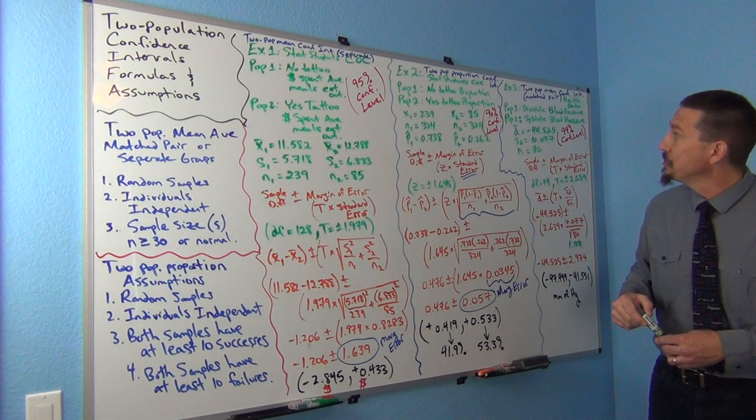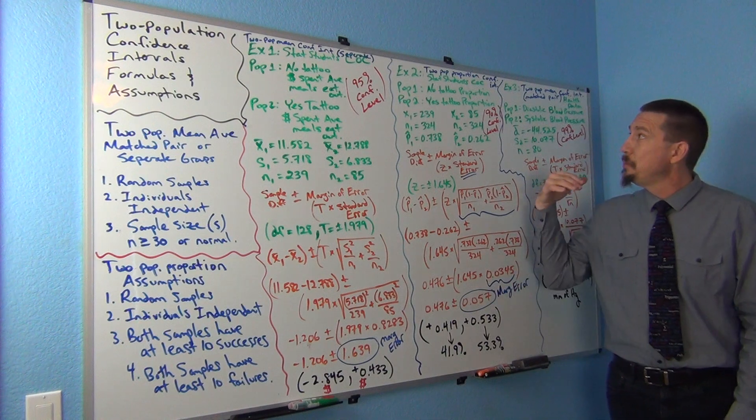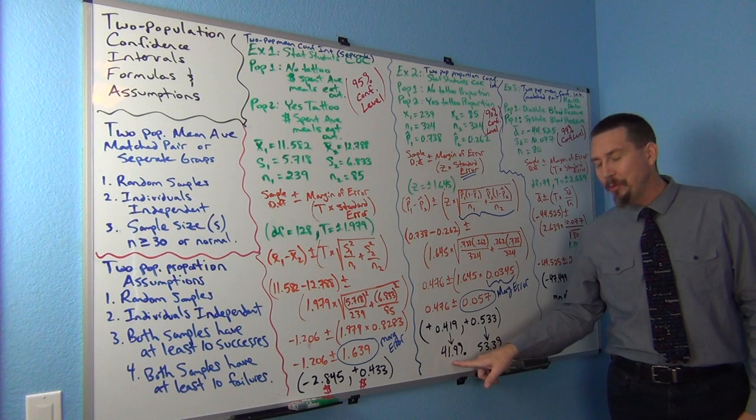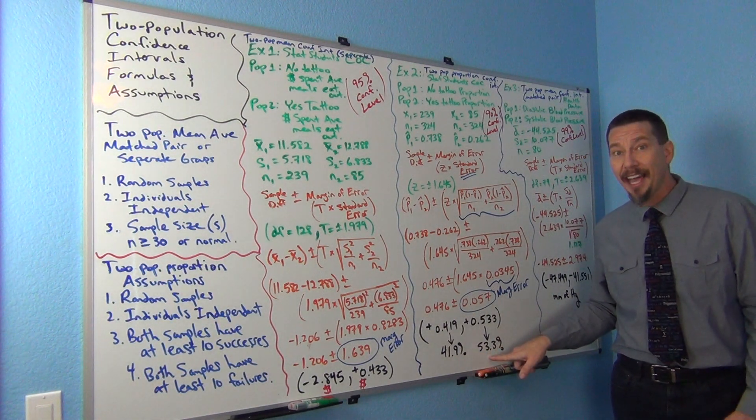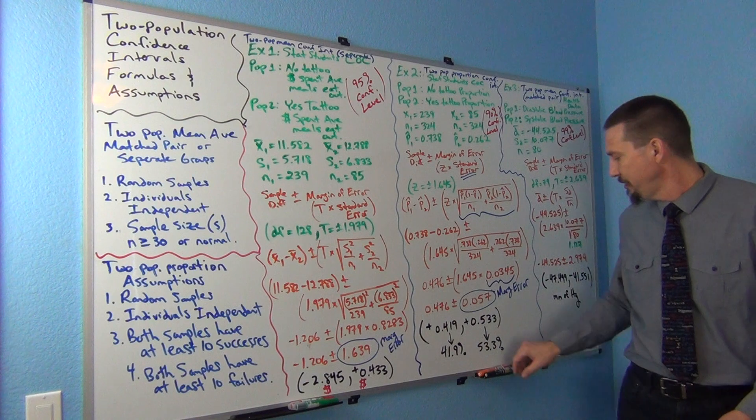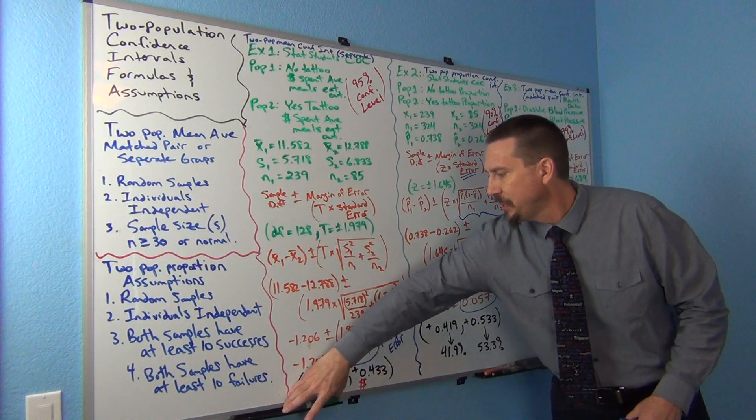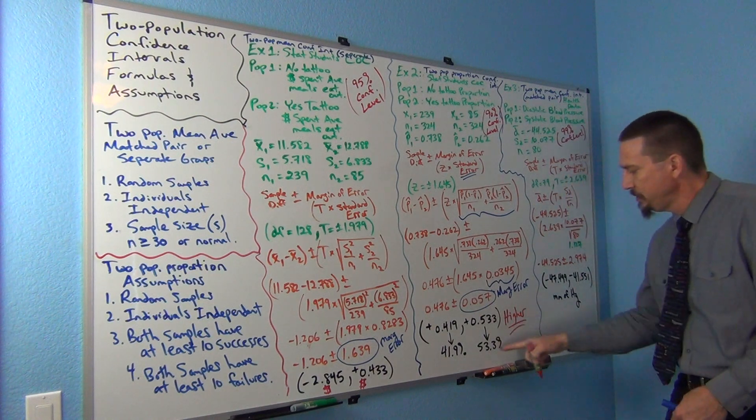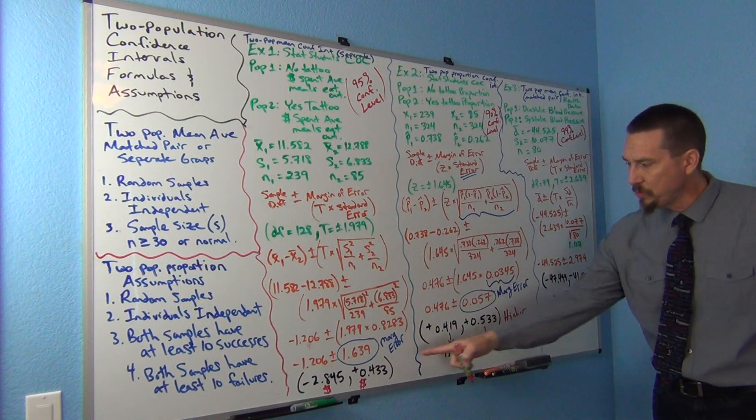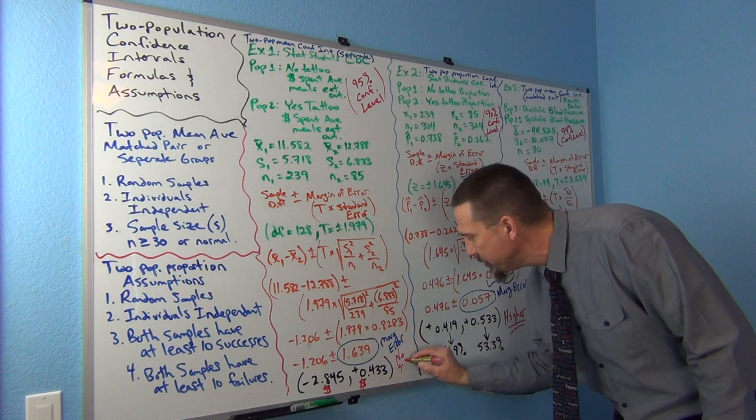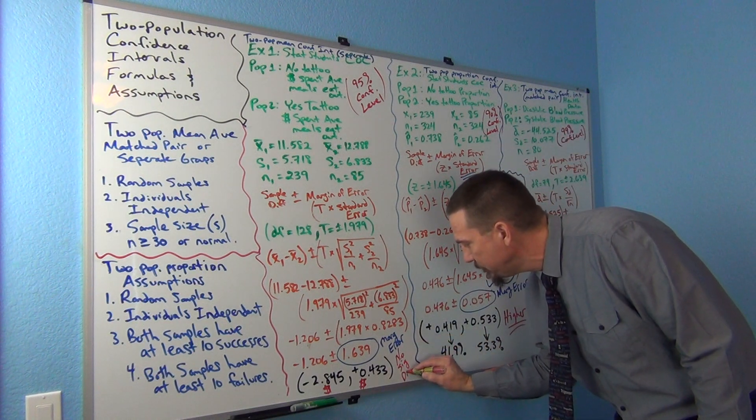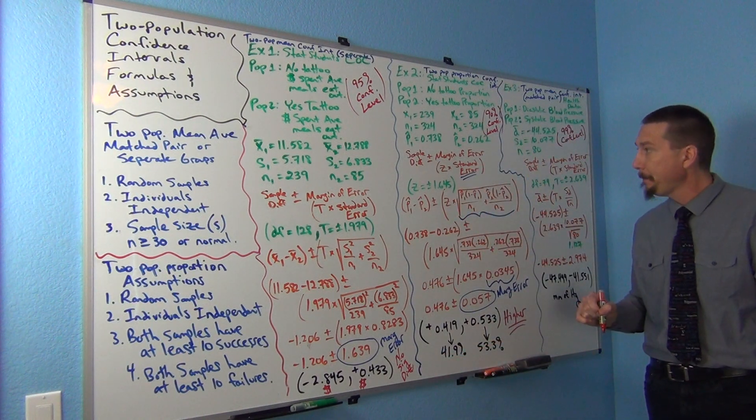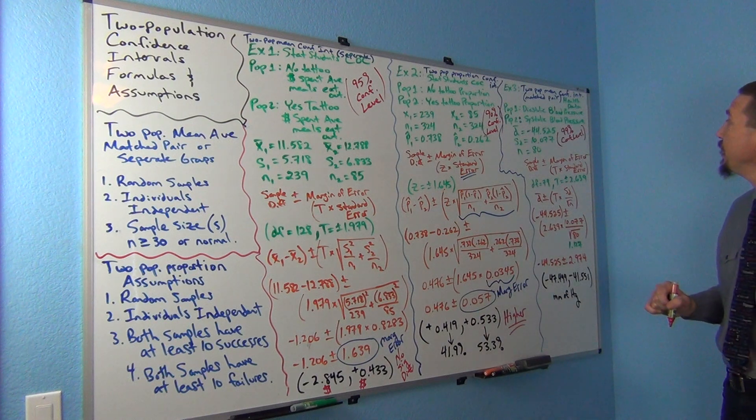So we are 90% confident that the percentage of COC STAT students that do not have a tattoo is between 41.9% and 53.5% higher, right? Higher. Let's write that higher. So this is telling me higher because it's positive, positive. This one over here, no significant difference, right? It was negative, positive. So this is between these two numbers higher. That's what we think. Okay, let's look at the next one here.